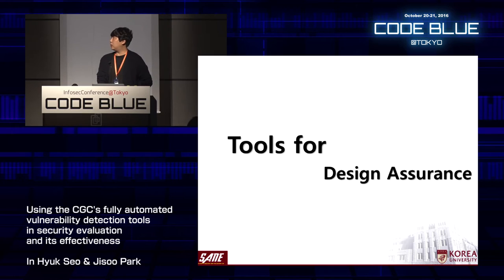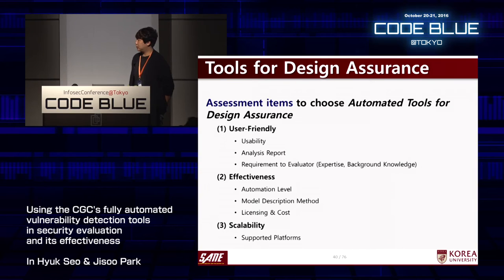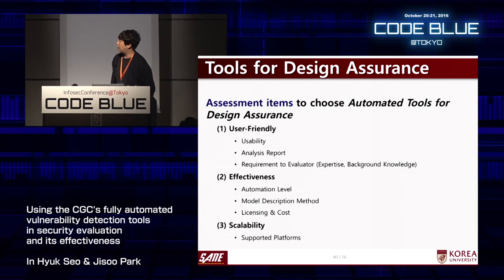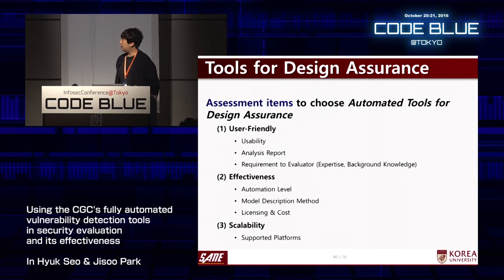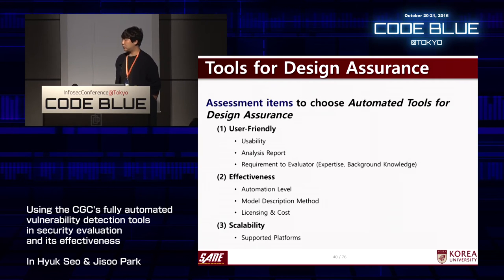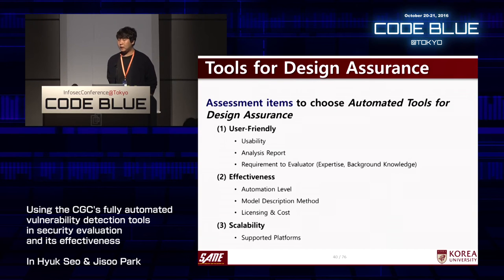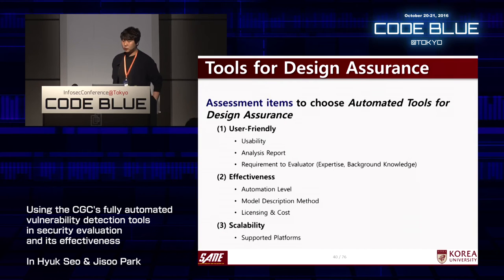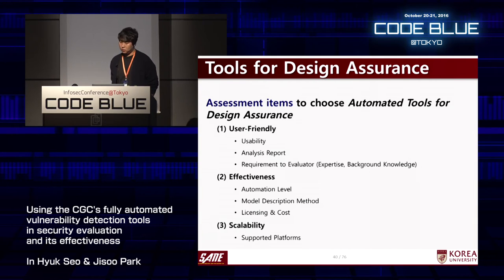Let's talk about tools for design assurance. Assessment items include: user-friendliness, composed of usability, analysis report, and requirement to evaluator. Usability considers UI such as graphic or command line, accessibility, and ease of installation. Analysis report checks whether the tool provides a test report and whether it is easy to understand. Requirement to evaluator checks whether the tool demands additional requirements from the security evaluator.